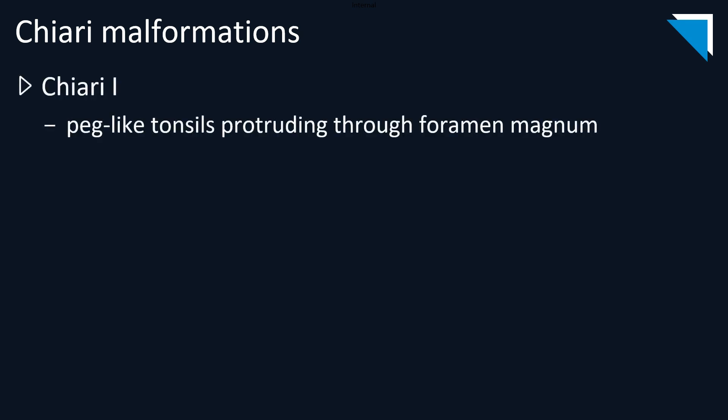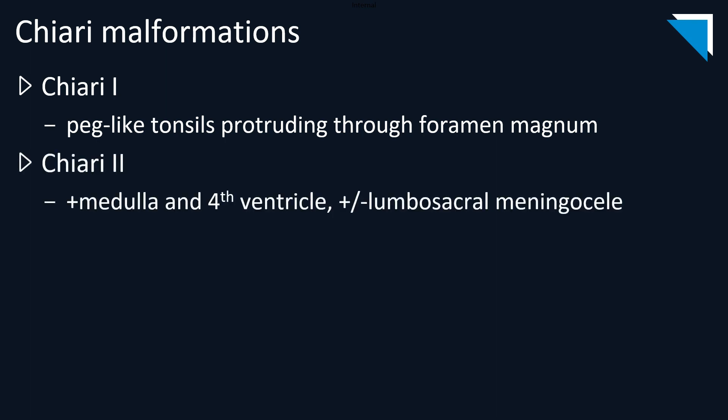Let's briefly review some of the different types of Chiari malformations. Type 1 is the most common and, as we've just seen, involves protrusion of the cerebellar tonsils through the foramen magnum. In patients with Chiari 2 malformations, the medulla, fourth ventricle, and cerebellar vermis will join the cerebellar tonsils in protruding through the foramen magnum. These patients also commonly have lumbosacral meningoceles.